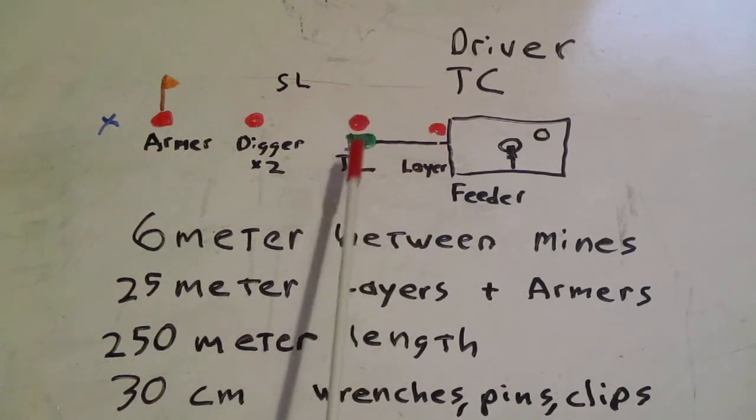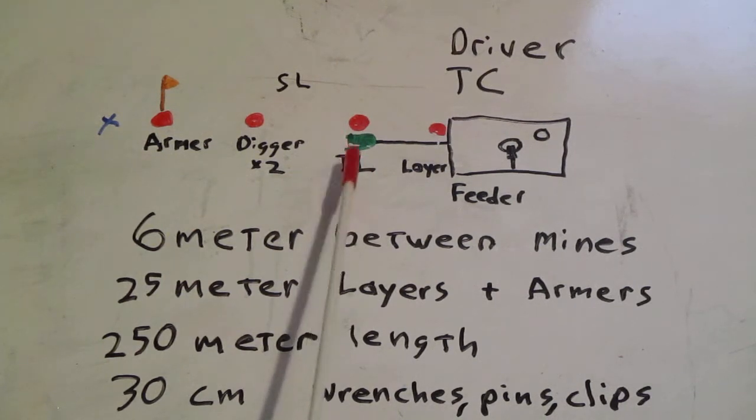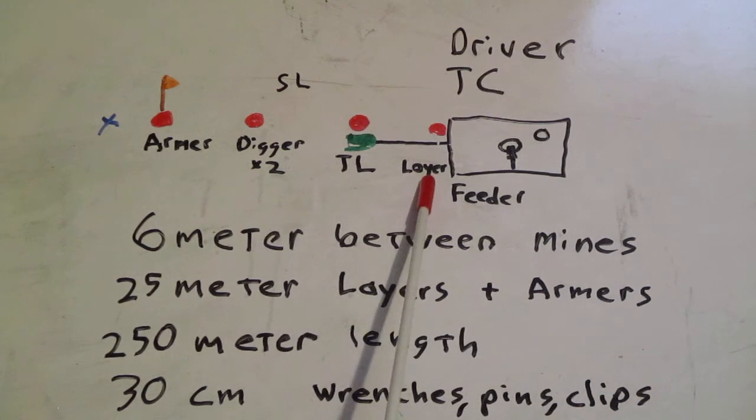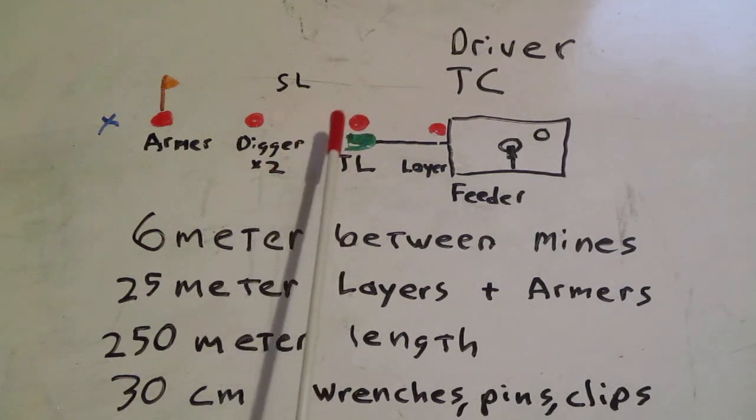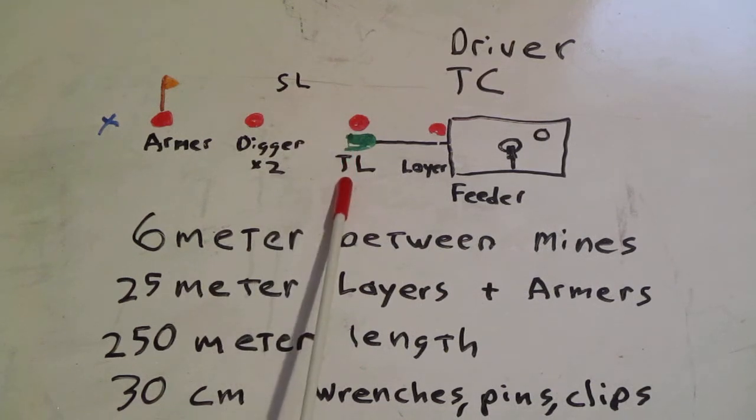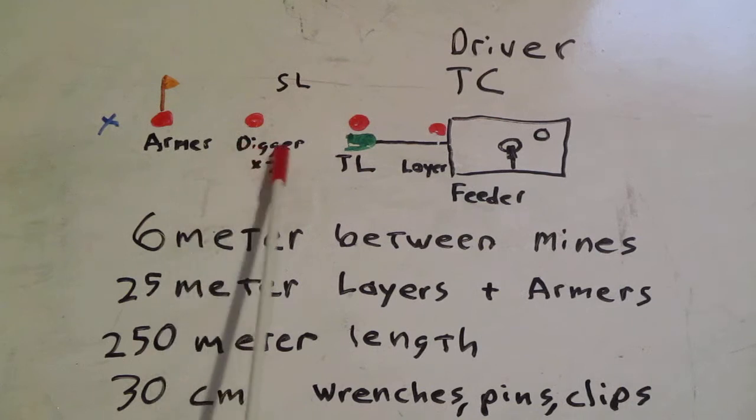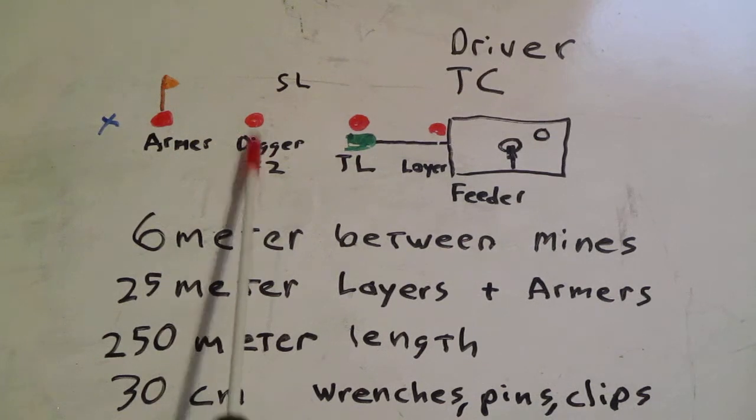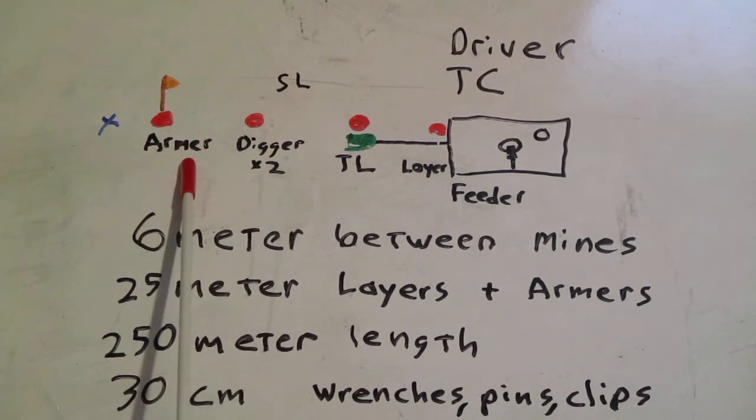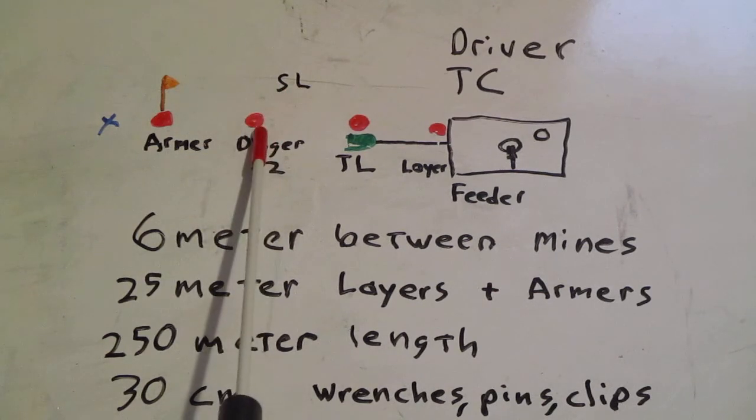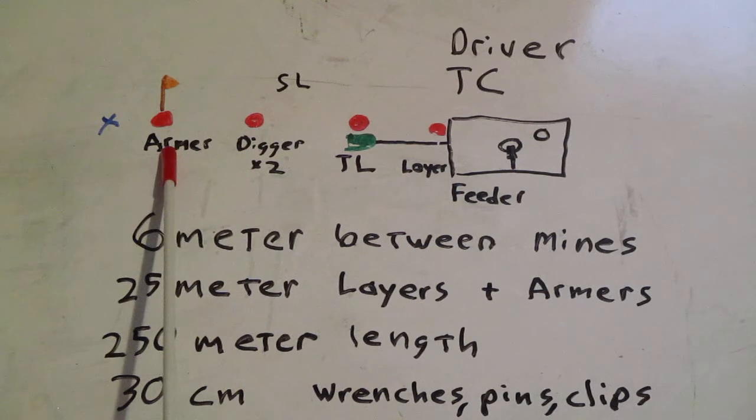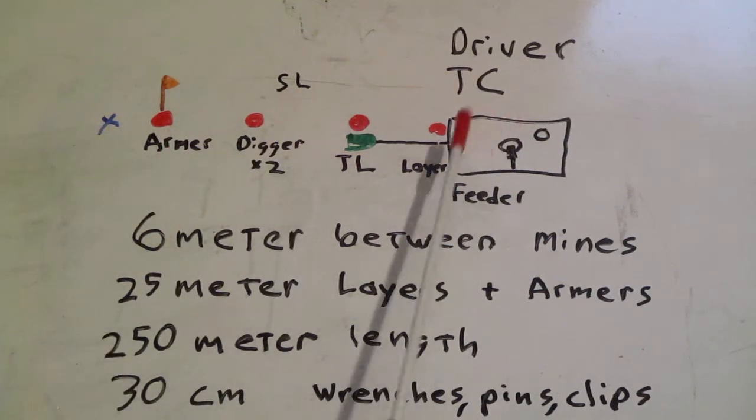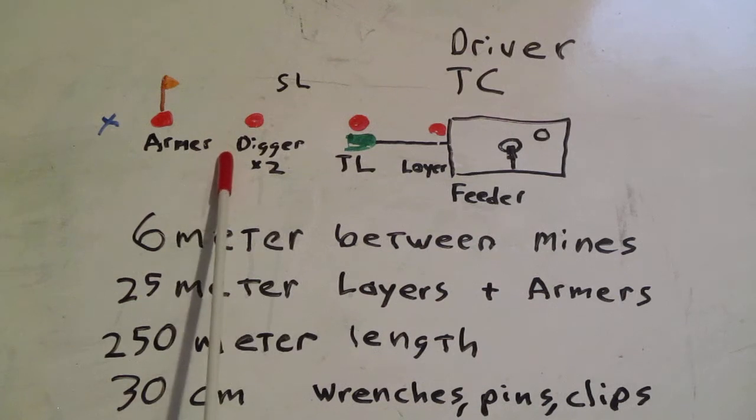Back at the sandbag you will have a team leader. That team leader lets the layer know when to drop the mine on the ground. At least 25 meters back, so at least four mines back from the team leader, you have your arming team. You'll have one or two diggers and one armer. The diggers should always be at least one mine ahead of the armer, so there should be at least one unarmed mine between the digger and the armer. The squad leader is in charge of the overall mission but spends most of his time back here with the arming team, making sure everything's being done safely and correctly.